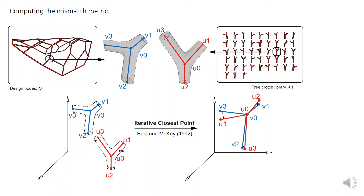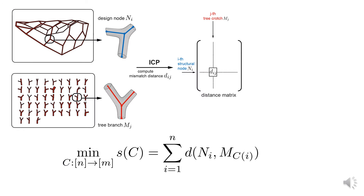We only need to perform a few corresponding iterations within the ICP algorithm. After the shapes are registered together, we define the mismatching metric as a summation of the distances between corresponding points in the registered shapes. For example, we define the mismatching metric as the summation of the distances between U1 and V3, U3 and V2, and U2 and V1, and we use this number to characterize the geometric mismatch between the two shapes. We perform this computation for each pair of design nodes and tree forks in the inventory, and compile each mismatching score into a distance matrix, in which all the geometric information we care about in this problem is encoded.